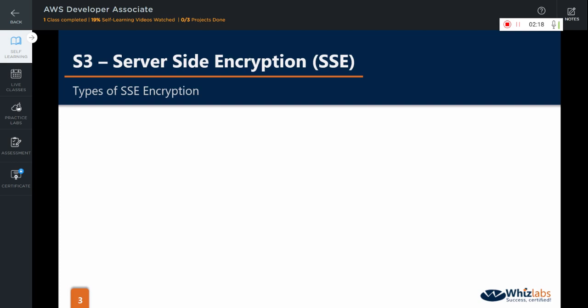Encryption keys are the keys that are used to encrypt some information or data, and decryption keys are the ones that decrypt that information. The first encryption option is server-side encryption with Amazon S3 managed keys, or SSE-S3. As the name suggests, creating and managing the encryption keys is done by S3.